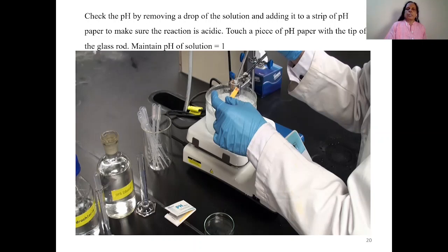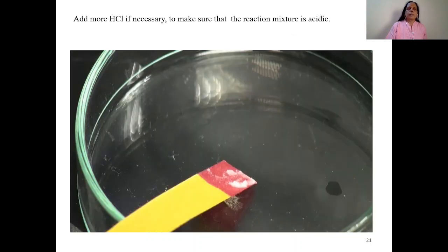Don't insert that paper in your reaction mixture, otherwise that reaction mixture gets colored. You will get pH paper color to that reaction mixture. So to avoid that, don't dip that pH paper in reaction mixture. Now if pH 1 is not maintained, add more HCl to make sure that reaction mixture is acidic.